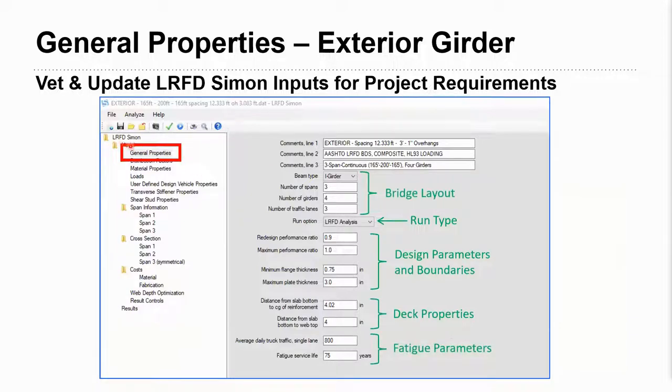So the first menu is the model tree where we have these design tabs to go through. These top three lines, the comment lines, I would just say make it something that makes sense to you and your checker. Generally, I like to define the geometry, the design criteria perhaps, and just anything that helps you easily open this file and know what we're working with here. So make it something that works for you.